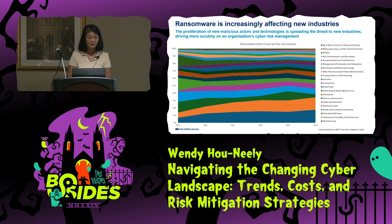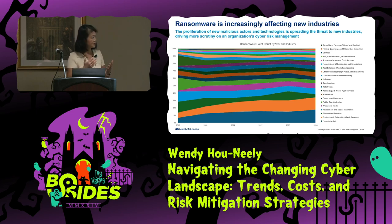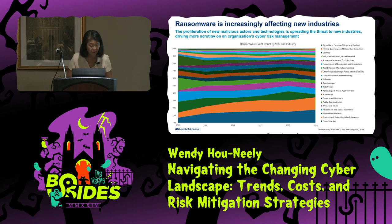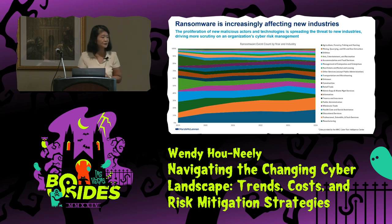This next chart is specifically ransomware — the previous one covered all cyber events including privacy and business interruption. Looking at ransomware by industry, manufacturing is number one in terms of count, and professional services like accounting firms and law firms are getting hit more frequently now. If you look at 2019 they were a very small band, but it's come over and is almost twice as much as before. You can see how the ransomware landscape evolves across industries.